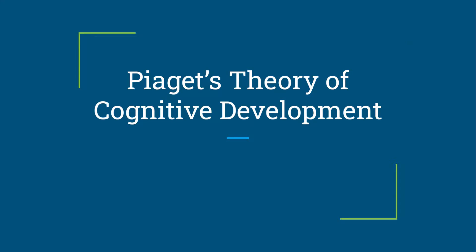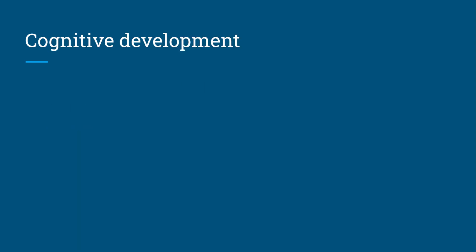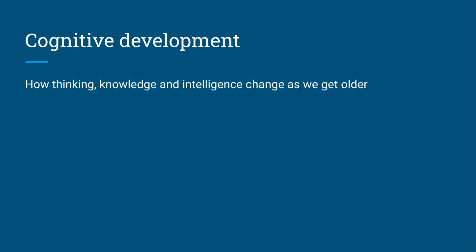This video is going to look at Piaget's theory of cognitive development. On your specification it states you've got to understand Piaget's theory of cognitive development, assimilation, and accommodation. So we'll go through all those key ideas in this particular video. Regarding cognitive development, this is how thinking, knowledge, and intelligence change as we get older. Whenever you see the word cognitive, you can think of it as thinking - they're interchangeable. So cognitive development just means how our thinking develops.